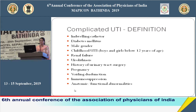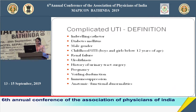Conditions that label a UTI as complicated: any patient with an indwelling catheter; UTIs in a patient with diabetes mellitus; any UTI in male gender; UTI in a child under 12 years of age; UTI in the presence of renal failure, renal stones, or history of urinary tract surgery; UTI in a pregnant female; UTI with voiding dysfunction such as neurogenic bladder (congenital or acquired due to spinal cord injury); and UTI in any patient on immunosuppression, like transplant patients.